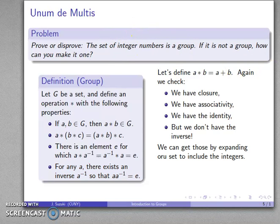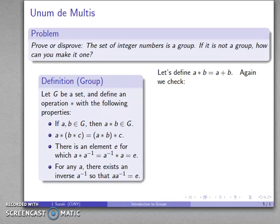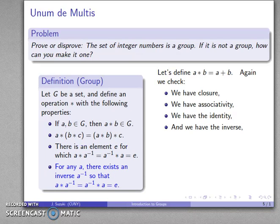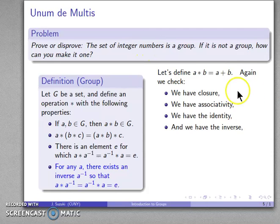Let's expand our set to the integers and check if they form a group. We continue to define A star B as A plus B. Checking all properties: we have closure (the sum of two integers is an integer), we have associativity, we have the identity element zero, and because we're dealing with the integers, we do have the inverse — given any integer, I can find another integer that when added gives zero. So the set of integers under integer addition does form a group.